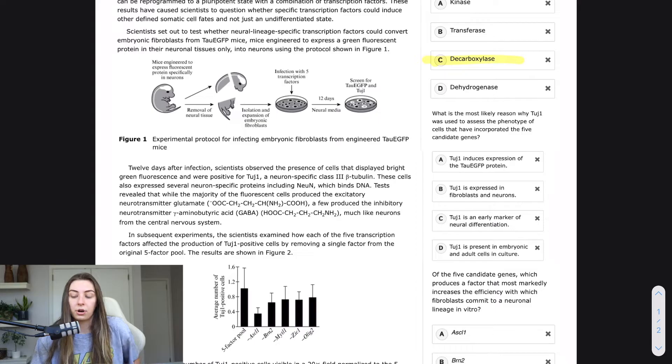So the phenotype of the cells that have incorporated the five candidate genes mentioned down here are neurons. So now our question is, what is the most likely reason why TOOGE1 was used to assess neurons? Okay. Even simpler, you could just say, why was TOOGE1 used? What does it have to do with neurons?